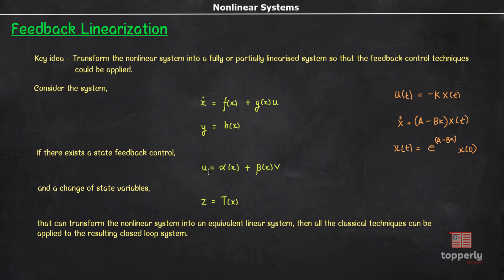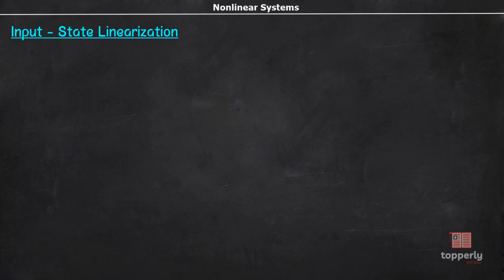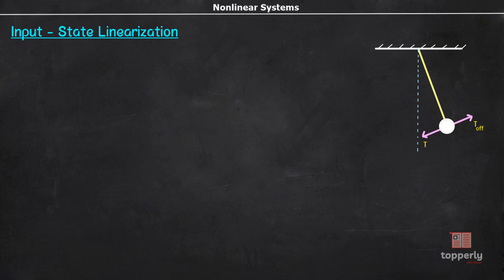That is, the goal is to cancel out the nonlinearities in h(x) so that the output equation is in linear form and explicitly tied to the input u(t). Now, let us first discuss input-state linearization. To introduce the concept, let's start with a problem. Consider the example of a pendulum system. If θ is the angle made by the pendulum with the vertical axis, then the differential equation is given by d²θ/dt² = -a sin θ - b θ-dot + cτ, where τ is the applied torque and a and b are relevant constants.